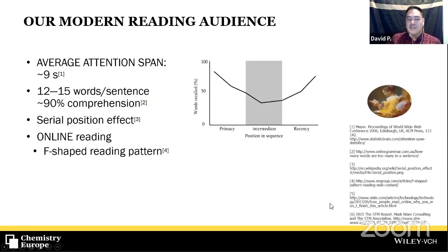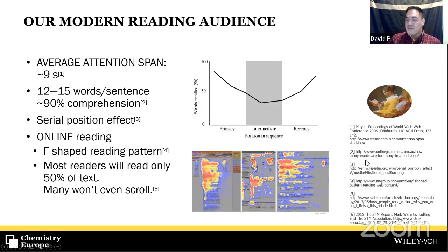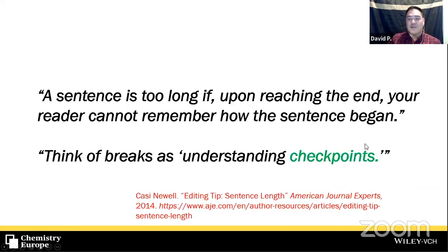When looking at something on screen in English, there's the F-shaped reading pattern: our eyes go to the top-left of the screen, travel all the way through the first row, but eventually we just stay on the left side. So you want your key messages immediately at the top of your abstract. Most readers will not read the entire thing, and many will not even scroll. Think of your audience and try to please them. A sentence is too long if, upon reaching the end, your reader cannot remember how it began.